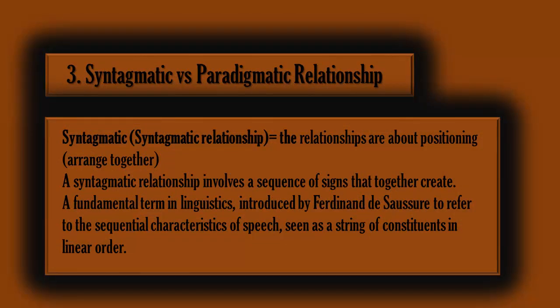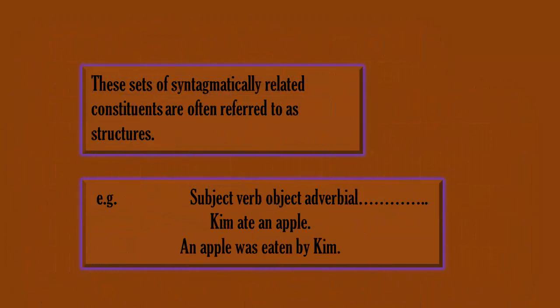The next topic in structuralism is syntagmatic and paradigmatic relationships. Syntagmatic relationships are about positioning — that is, the arrangement of signs together in a sentence. A syntagmatic relationship involves a sequence of signs that together create meaning. Originally introduced by Ferdinand de Saussure to refer to the sequential characteristics of speech, it is seen as a string of constituents in a linear order, often referred to as structure.